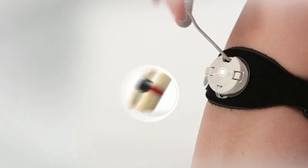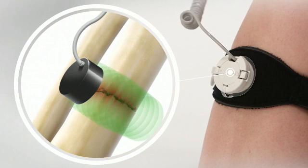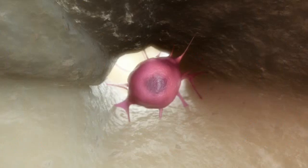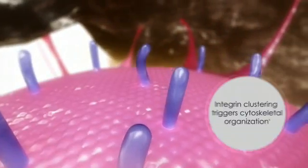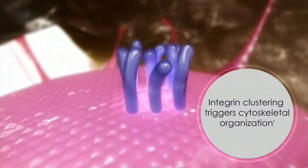To achieve this active healing response, Exogen low-intensity pulsed ultrasound waves pass through skin and soft tissue to reach the fracture. As the Exogen signal reaches the cells, surface molecules called integrins begin to cluster, triggering an organization of the cytoskeleton.